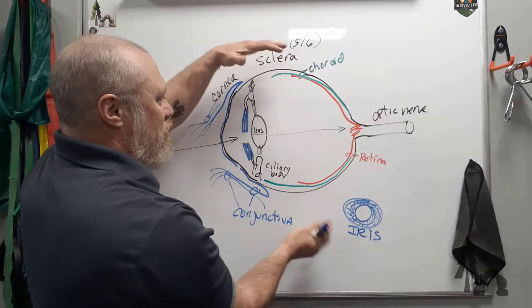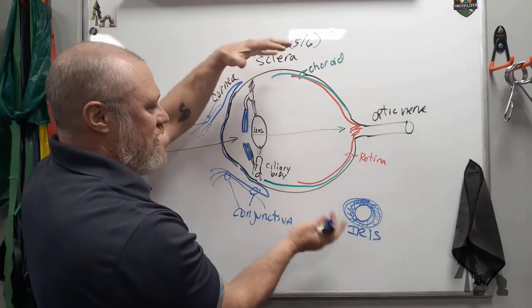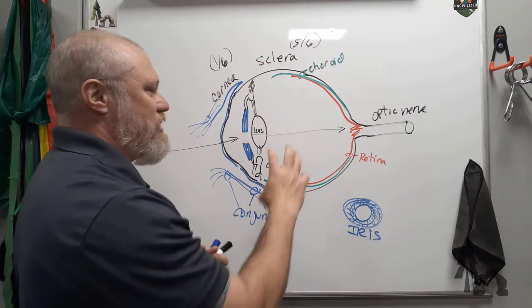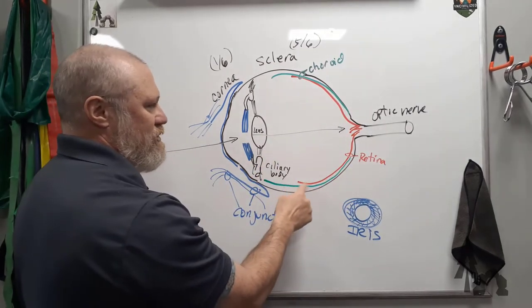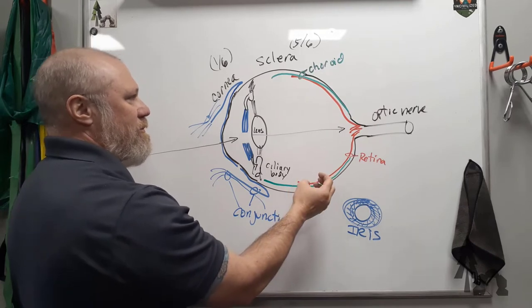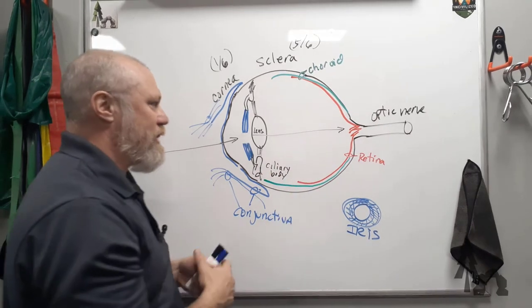And the whole thing's closed off, and between the anterior and posterior chamber, those two fluids give the eye some rigidity, so it doesn't collapse. And the blood pressure from the vessels that are flowing through the choroid, they're also going to be providing some pressure.